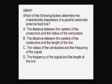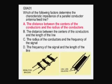Which of the following factors determine the characteristic impedance of a parallel conductor antenna feed line? Let's take a look at what a parallel conductor antenna feed line is. That's this kind of feed line. It can be an open line like this with spacers between, or it can be the ribbon type like this with a plastic dielectric in between the parallel conductors.